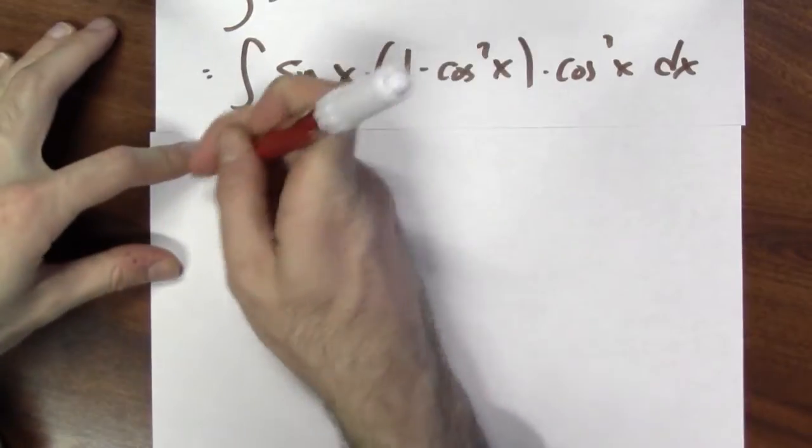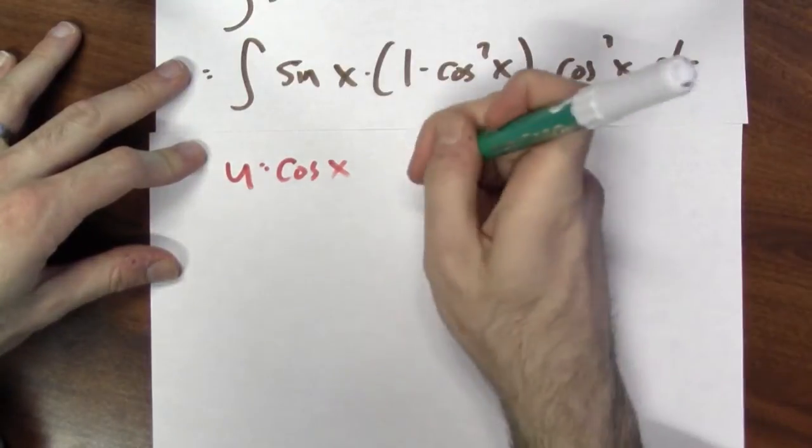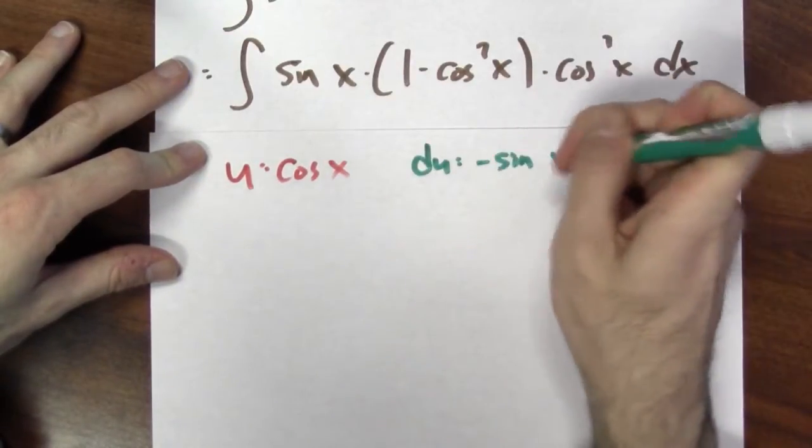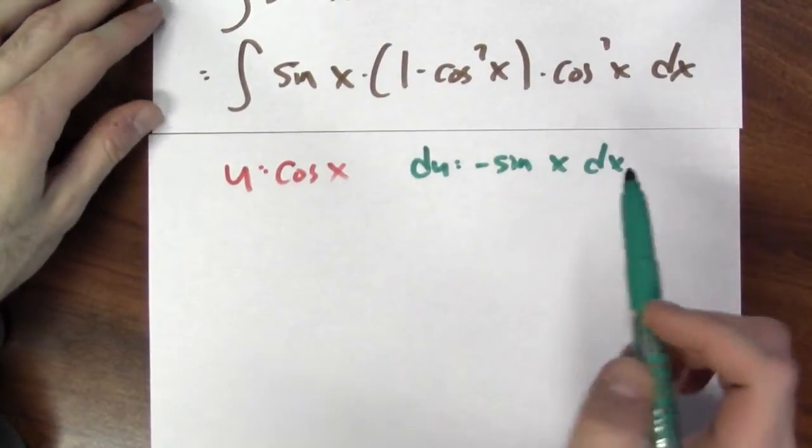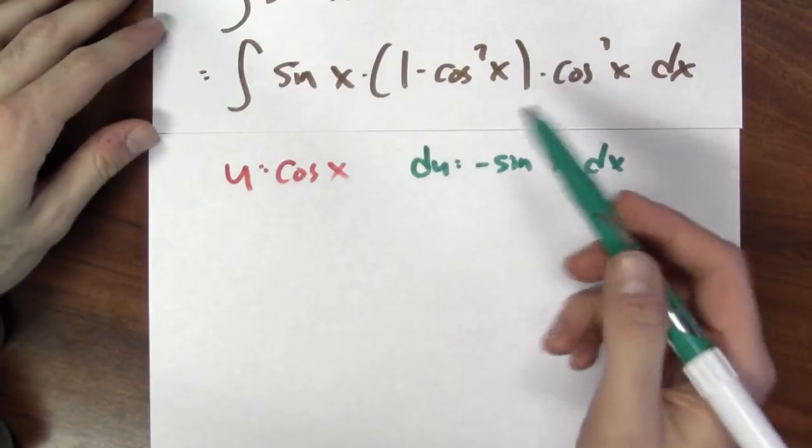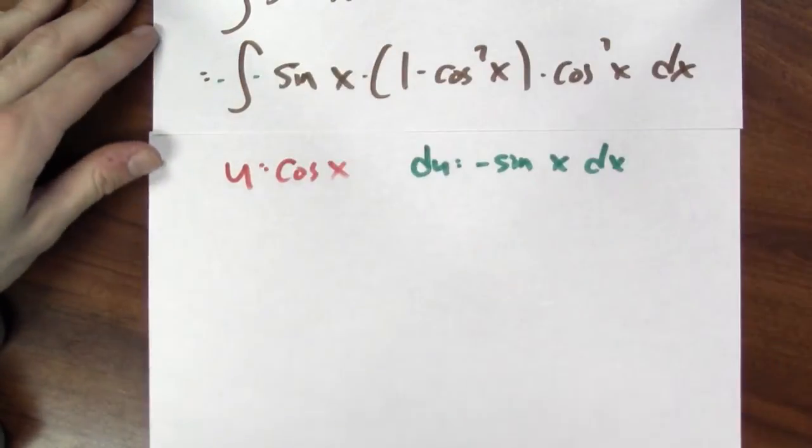Now I can make the substitution u equals cosine x. So u is cosine x, and in that case du is minus sine x dx, which I don't quite see here. But I can manufacture that by including a minus sign there.